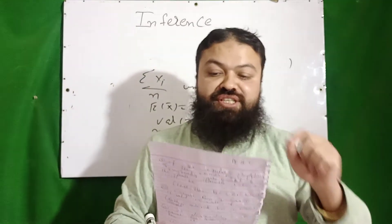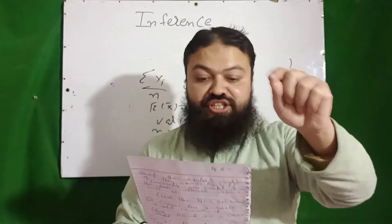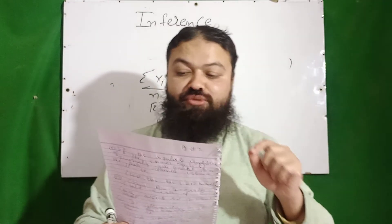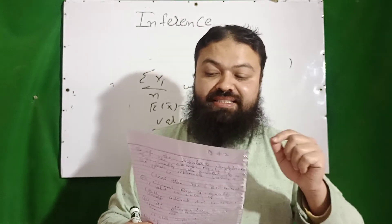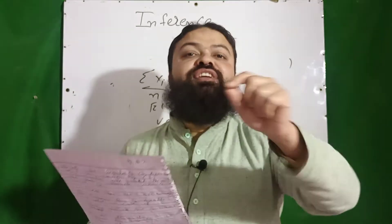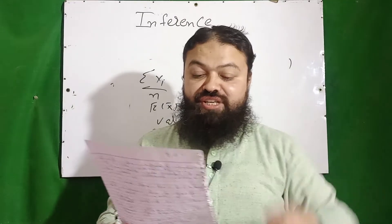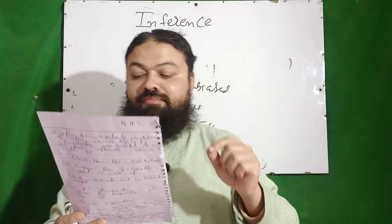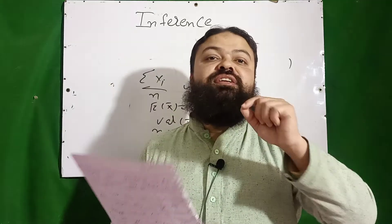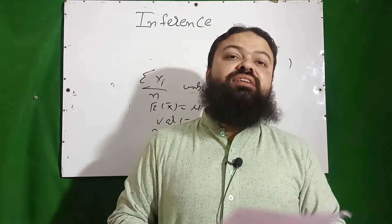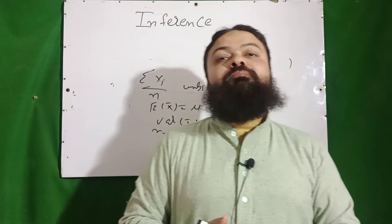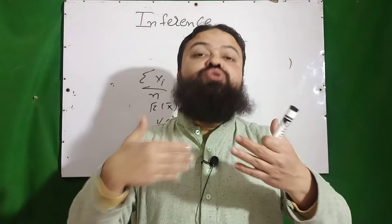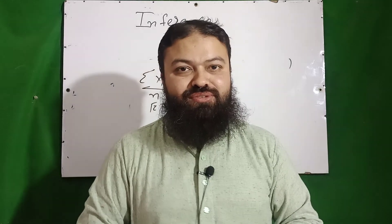Number seventeen: the criterion for sufficiency was suggested by Fisher. Number eighteen: the Pitman-Koopman form of probability distribution is used to determine the sufficient estimator of the parameter. Last question: the least squares estimators of the parameters of a linear model are not asymptotically normal. Dear students, please comment on today's lecture and tell me the topic you want to discuss. Assalamu Alaikum.